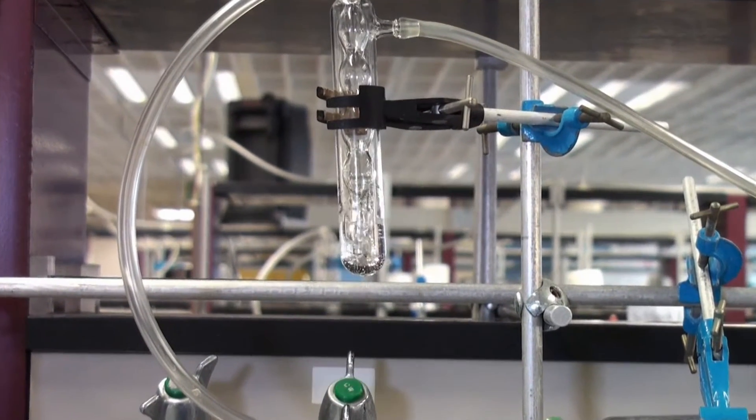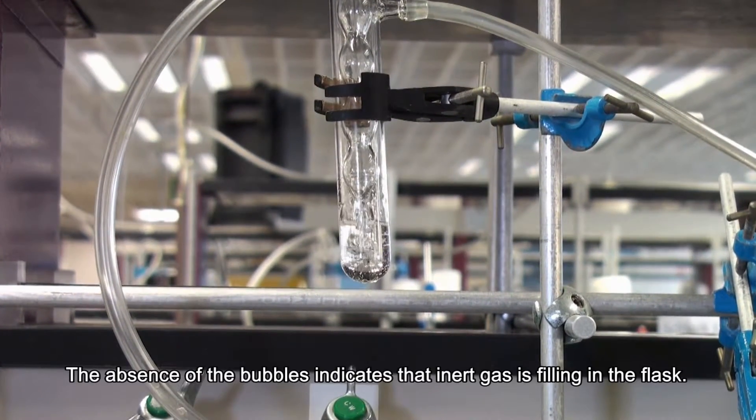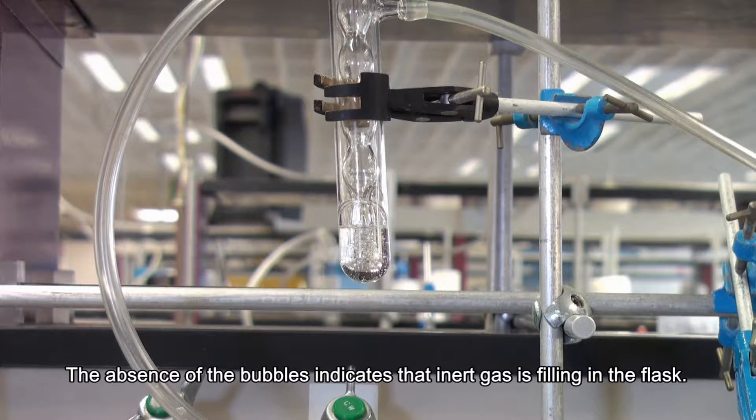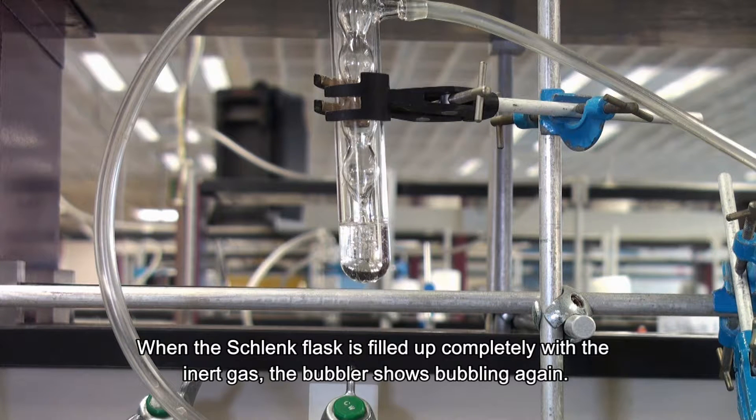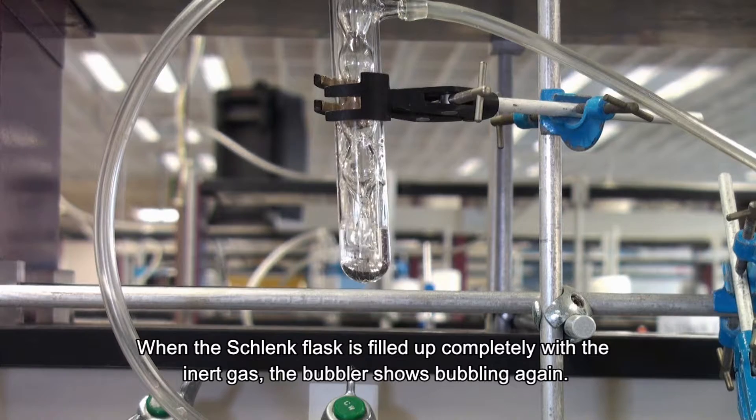Note at the bubbler. The absence of the bubbles indicates that inert gas is filling in the flask. When the Schlenk flask is filled up completely with the inert gas, the bubbler shows bubbling again.